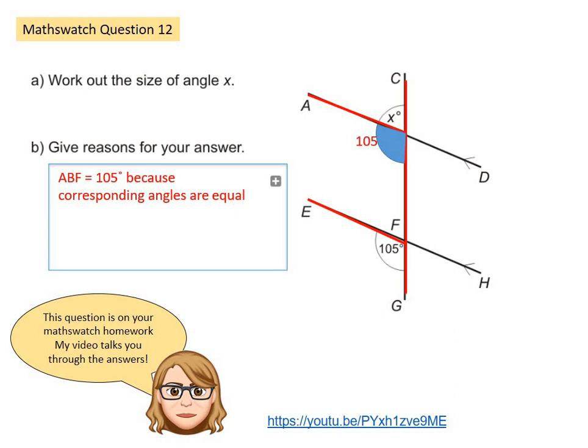X and angle ABF are on a straight line so if I take 105 away from 180 I get X which is 75 degrees and my reason is because angles on a straight line add to 180 degrees.